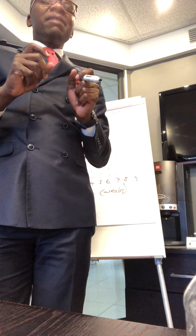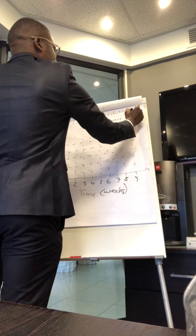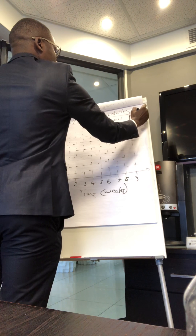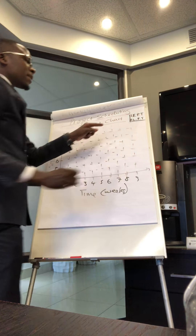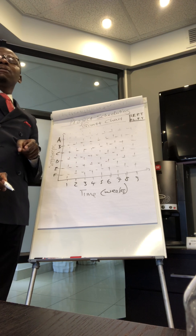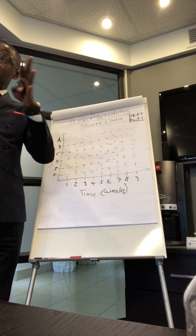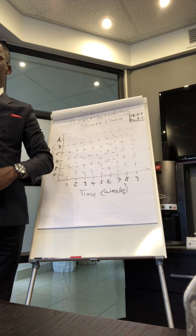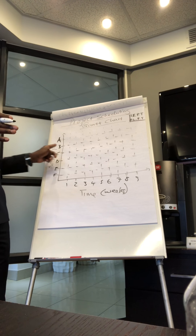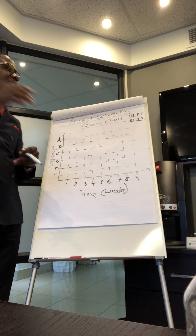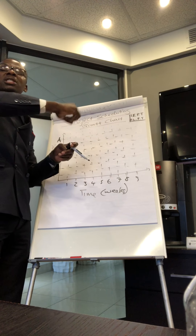In project management you get something called earliest possible time and latest possible time. Remember, a successful project is one which is finished on time, within budget, and of the right quality. So time is of critical importance, which means when we start our activities or deliverables they must always start at the earliest possible time so that our project can also finish at the right time.